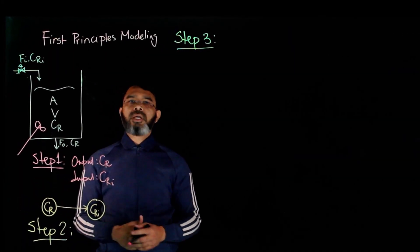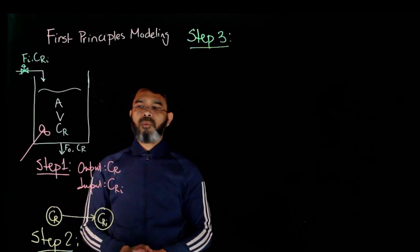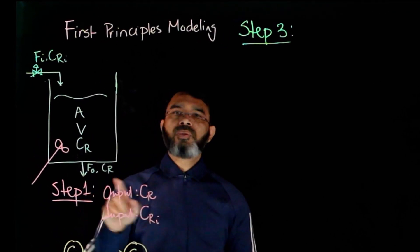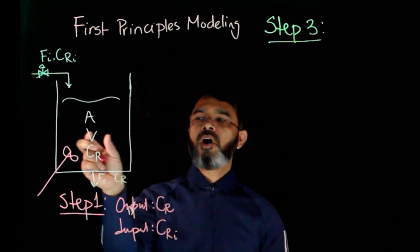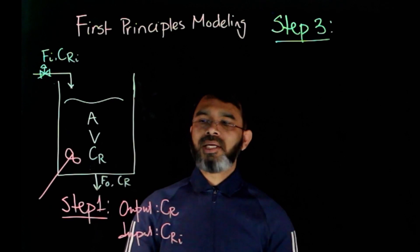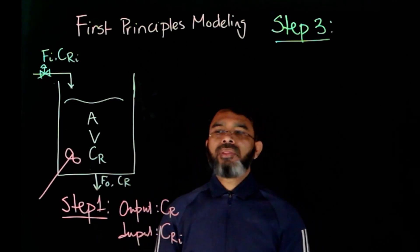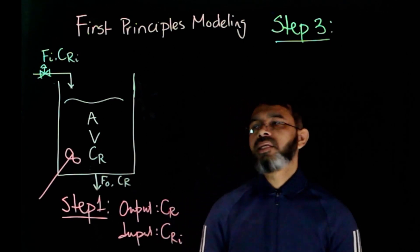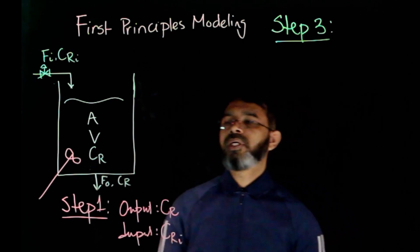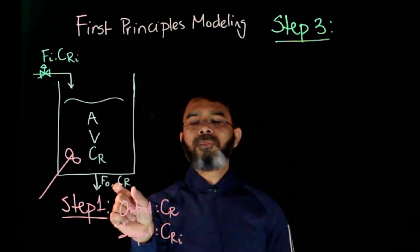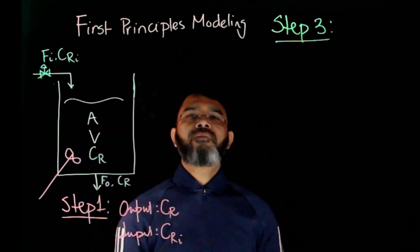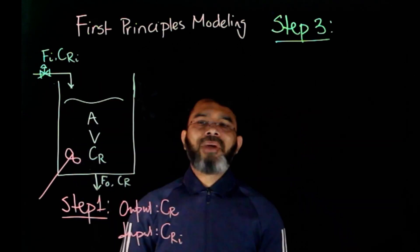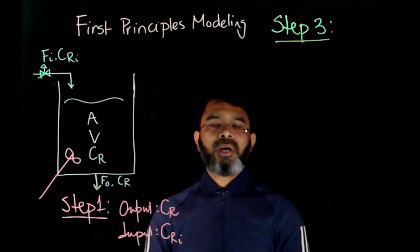Let's look at another example involving the component balance. In this case, the liquid coming in and the outlet flow is due to gravitational force, meaning that the volume of liquid in the tank is not constant. We'll start with step one: defining the modeling objective. For this case, can we get a model between CR and Fi? In other words, from the control perspective, can we maintain CR by manipulating Fi?